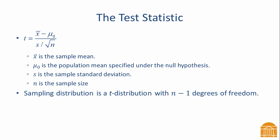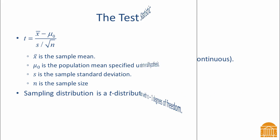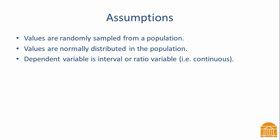There is a separate video that explains more about the t-distribution. Assumptions for a one-sample t-test are that the values are randomly sampled from a population that is normally distributed. The dependent variable must be a continuous variable.